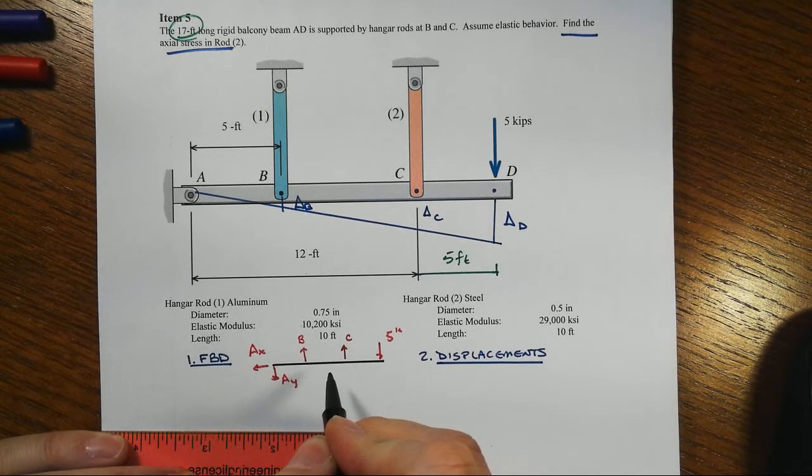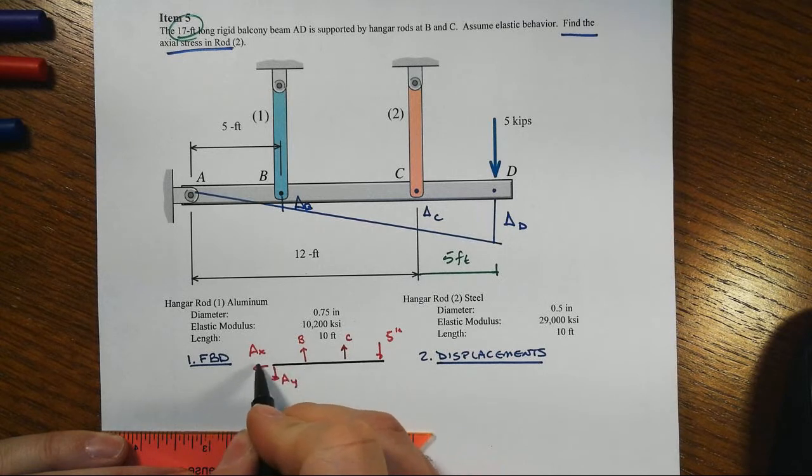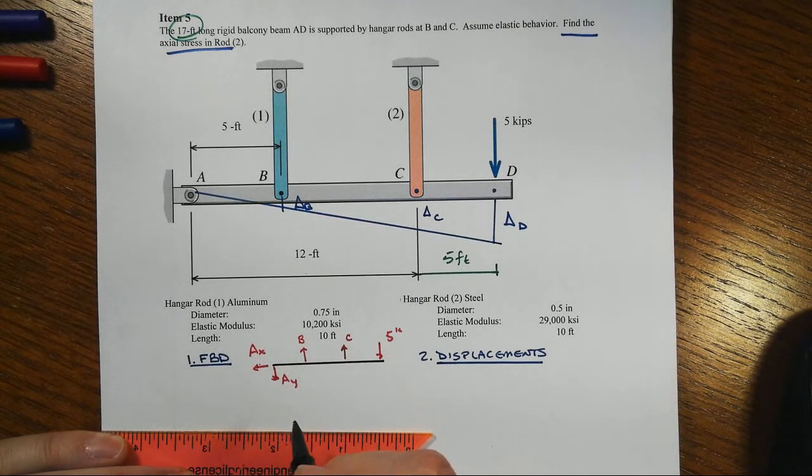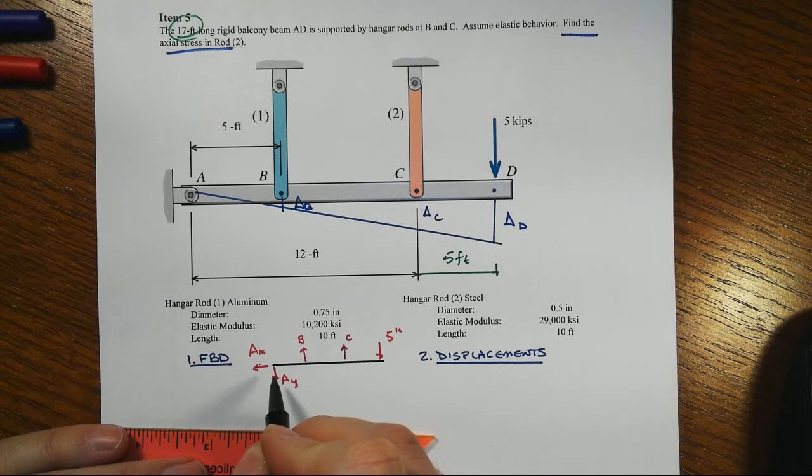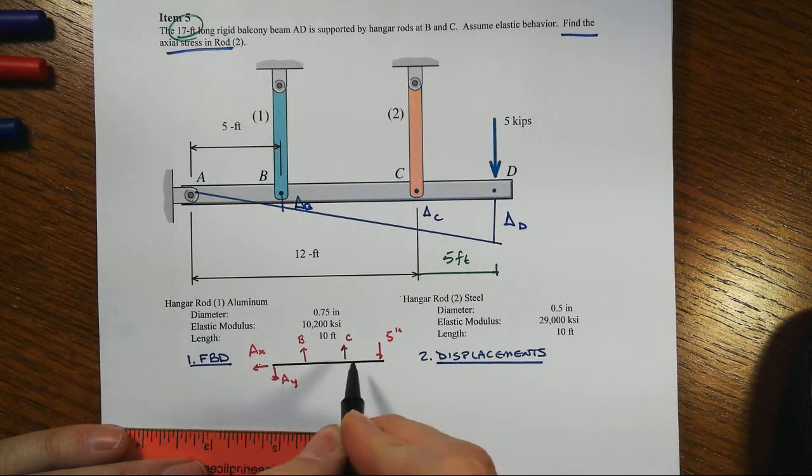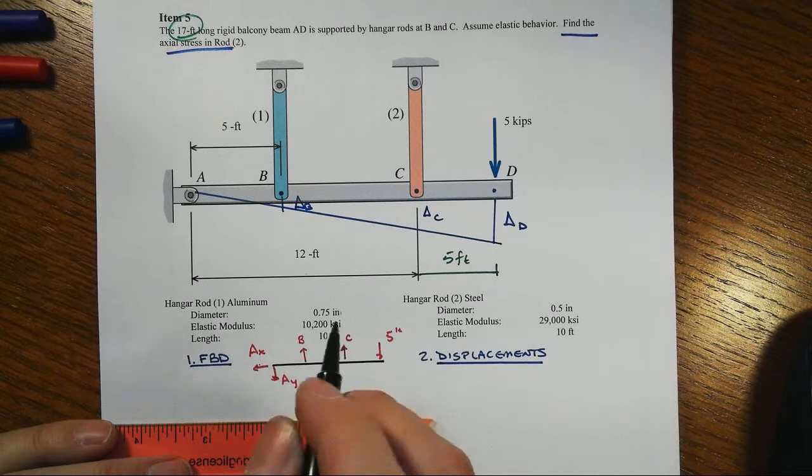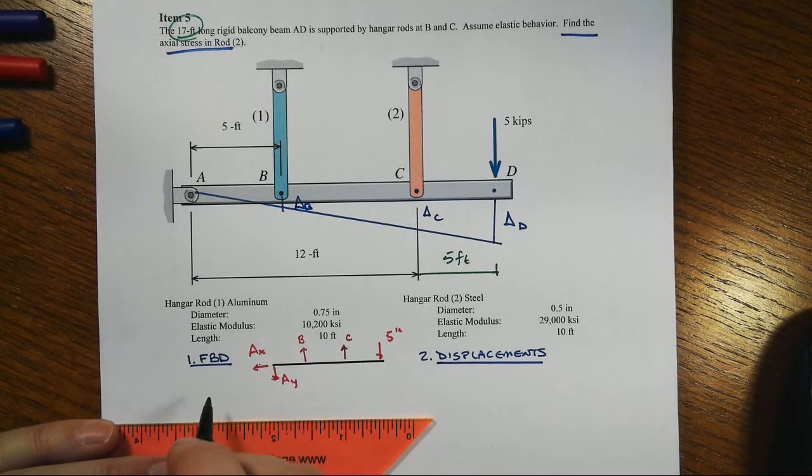So this tells me we have a statically indeterminate system because we have four independent forces. And I only have three equations of equilibrium for this nonconcurrent two-dimensional problem. So it is going to be statically indeterminate. Let's get rid of these two right off the bat.